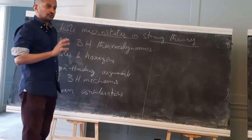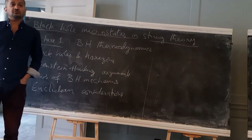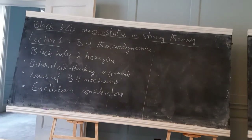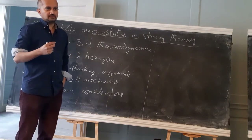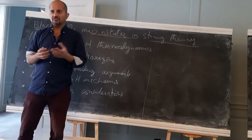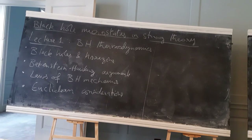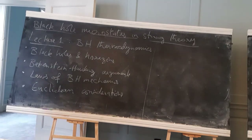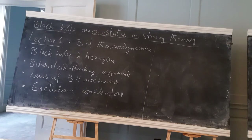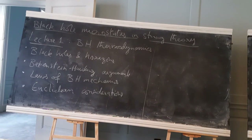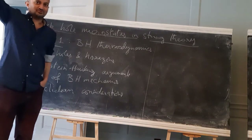String theory has made a lot of progress on this question for a class of supersymmetric black holes, where you can enumerate these microscopic states and verify that the Boltzmann formula is correct. You count these states, there is some statistical entropy and there is thermodynamic entropy, and you can check that these two agree with each other. That's roughly the goal of these lectures: to explain all this and show some examples of statistical entropy counting, then give you some tools to go further.